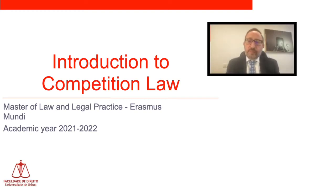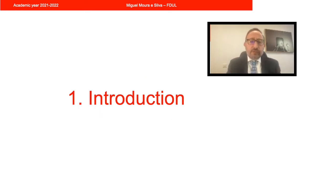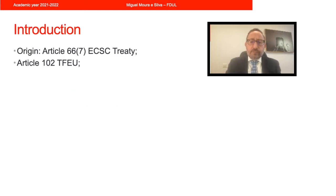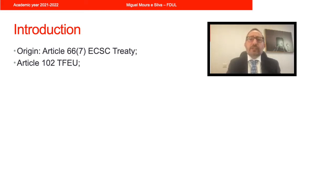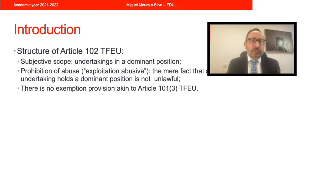Hi, in this video I'm going to cover some of the basics dealing with the abuse of dominance, abuse of dominant position, that is Article 102. The origin of the prohibition of abuse of dominance is really the ECSC Treaty, that is the treaty that established the European Community on Steel and Coal, where there was a provision, Article 66 paragraph 7, that dealt with abuse of dominance. This then influenced what was to become currently Article 102 of the Treaty on the Functioning of the European Union.